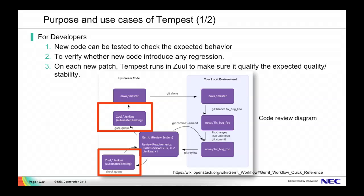The purpose and use cases of Tempest: for developers, new code can be tested to check expected behavior. The second is to verify whether new code introduces any regressions. The third is that on each new patch, Tempest runs in Zuul to make sure it qualifies the expected quality and stability. This is a diagram of the code review workflow, and the red square represents where Tempest runs.